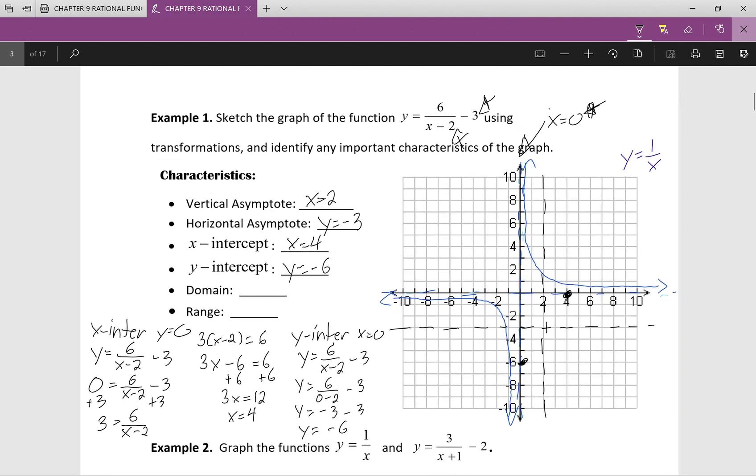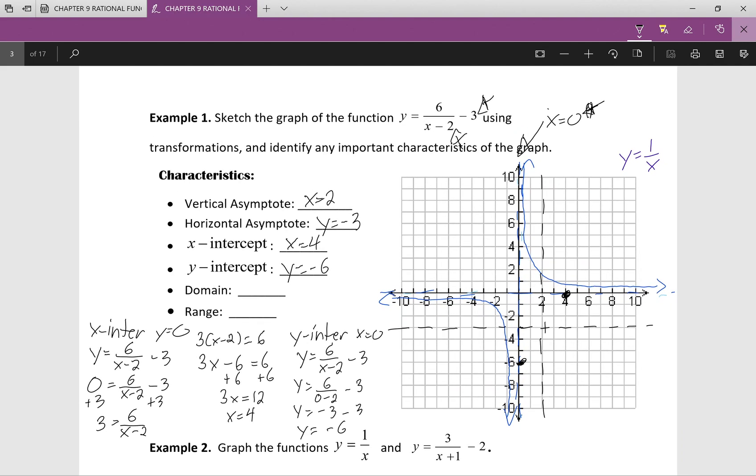So, my y-intercept occurs at y equals negative 6. Again, I just draw that dot on right there. So, sketching my graph, I'm going to be taking this blue graph that you guys see and just sort of mimicking it with the transformations. So, it comes there. It approaches that horizontal asymptote, goes through that point, approaches that vertical asymptote. And again, we approach the vertical asymptote, and we get that curvature, and we approach that horizontal asymptote.